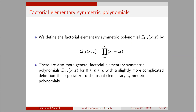I'm going to be very specific now about something I mentioned in passing earlier, which is factorial elementary symmetric polynomials. We're going to define a specific factorial elementary symmetric polynomial, e_kk of x and z, as the product as i goes from 1 to k of x_i minus z_1. The second k is the number of variables, and the first k is the degree. In this context, e_kk is the most important factorial elementary symmetric polynomial.